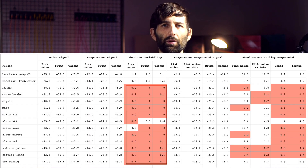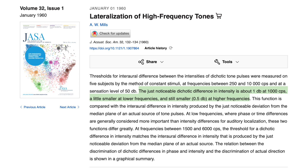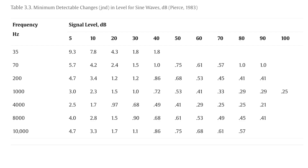The bigger the RMS number, the bigger the difference — meaning the more unique the plugin is and the worse I was able to match it. If it's really high, above 1dB, that means I failed to match it. This way we can better quantify the difference between the fancy plugin and Pro-Q 2. So how do we interpret these results? The JND, or just noticeable difference, is often cited as being around 1dB. This table shows different JNDs at different frequencies and different listening levels.